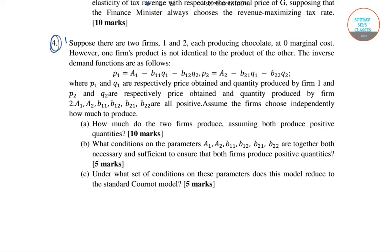In question number 4 it is given: suppose there are two firms, firm 1 and firm 2, each producing chocolate at zero marginal cost. However, one firm's product is not identical to the product of the other. The inverse demand functions are given as: P1 equals A1 minus B11·Q1 minus B12·Q2, and P2 equals A2 minus B21·Q1 minus B22·Q2.